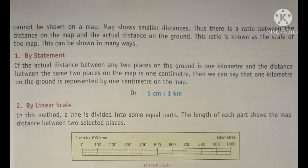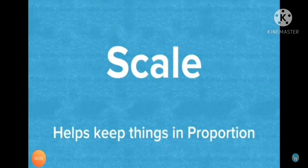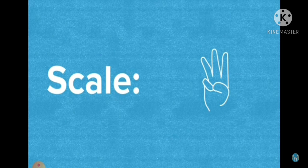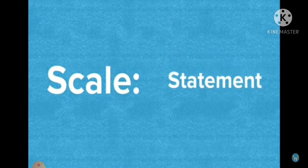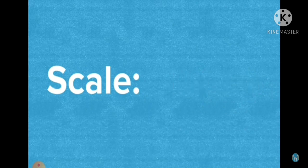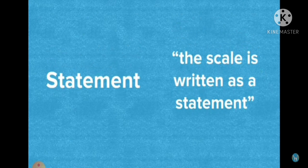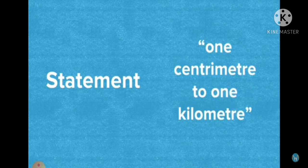Second, Linear Scale. In this method, a line is divided into some equal parts. The length of each part shows the map distance between two selected places. Scales keep things in proportion — 1 cm on the map means a large distance in real life. There are three ways in which scales are written: first, statement; second, line scale or linear scale; third, representative fraction or ratio, which will be studied next academic year.